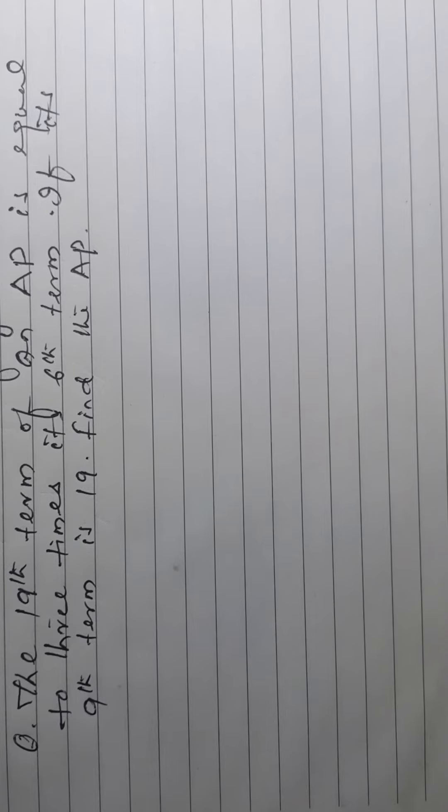The 19th term of an AP is equal to 3 times its 6th term. If its 9th term is 19, find the AP.